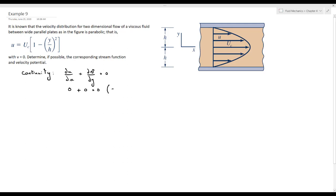over del x is equal to 0. u is not a function of x and v is equal to 0, so the summation of the two terms is equal to 0. So the continuity equation is satisfied, and we can determine the stream function.